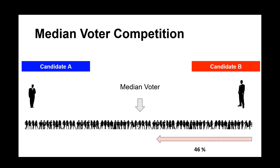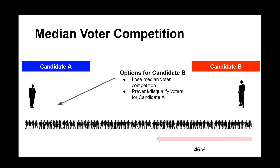What happens, however, when one of the candidates just happens to be unpopular? So what are the options for candidate B? Well, you can try and lose the median voter competition because you are just not as popular as candidate A, the other candidate in a two-party system.